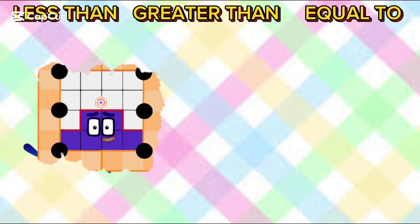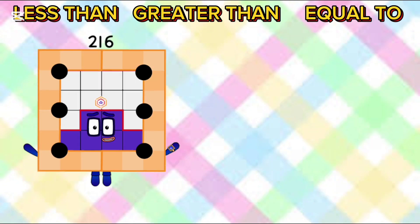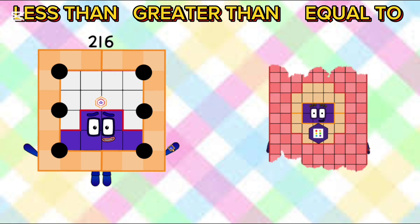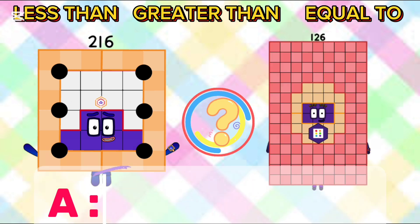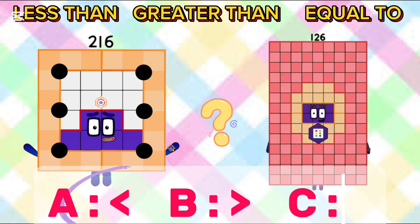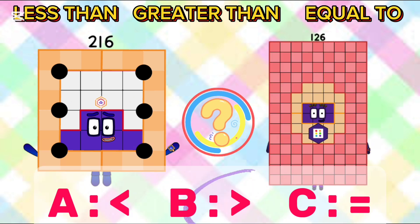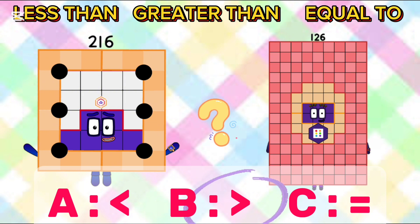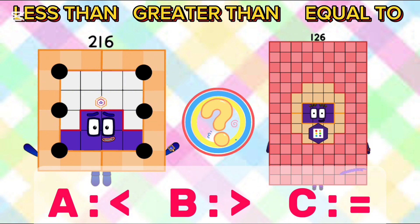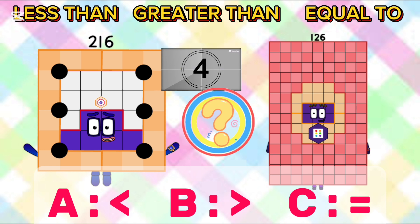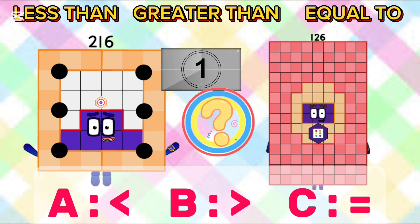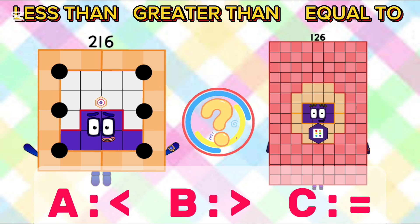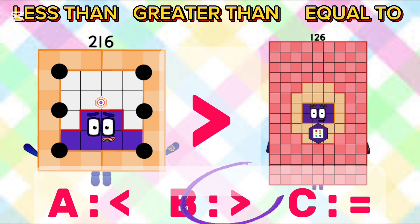216 and 126. What will come? A: less than, B: greater than, C: equal to. The answer is greater than. 216 is greater than 126.